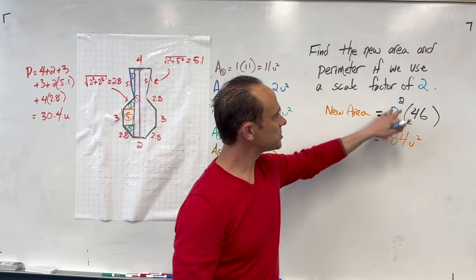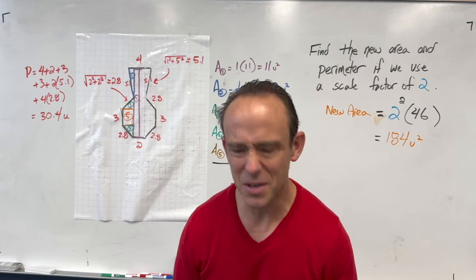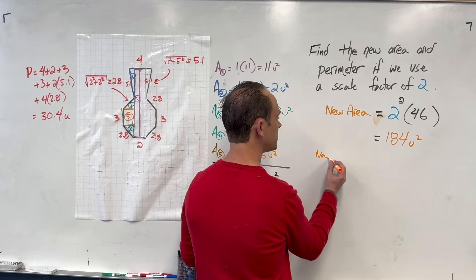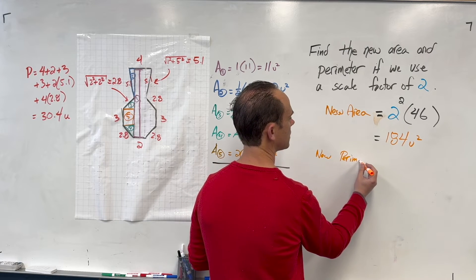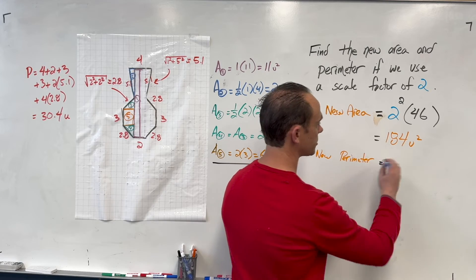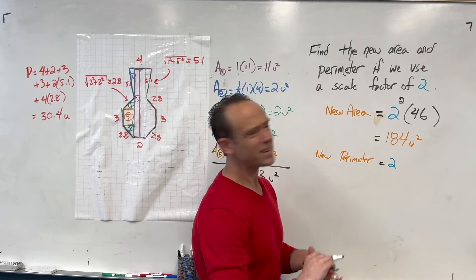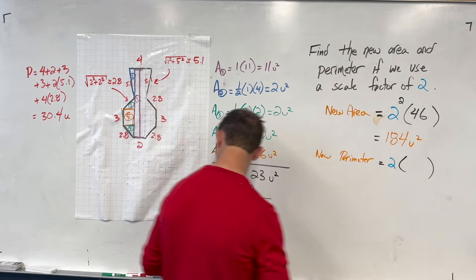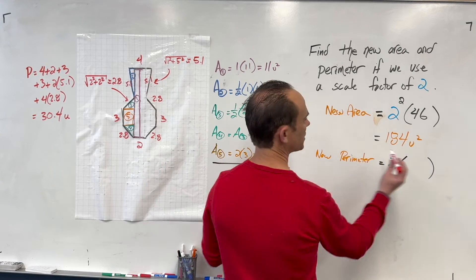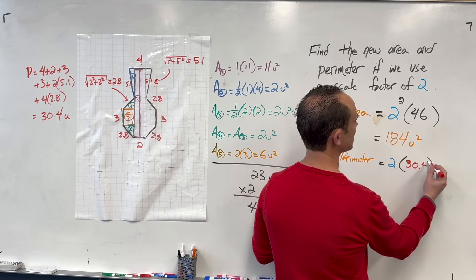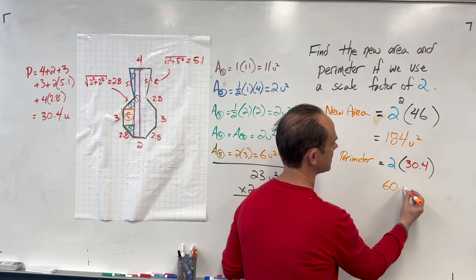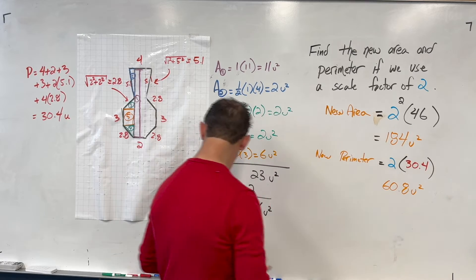Now the new perimeter: old perimeter times the scale factor. New perimeter = 2 × 30.4 = 60.8. That's it — scale factor of 2 applied to the perimeter directly.